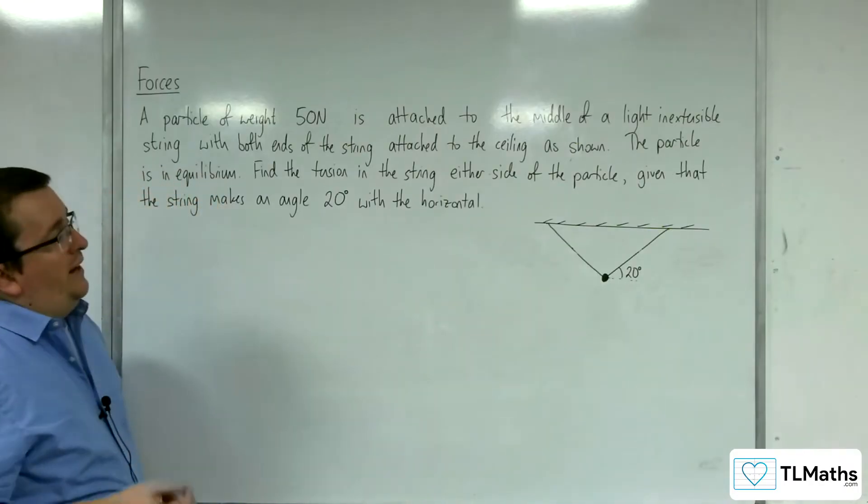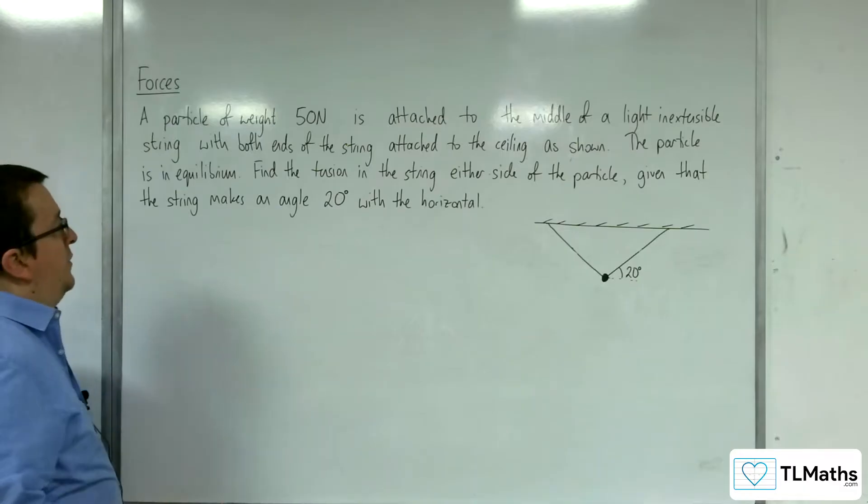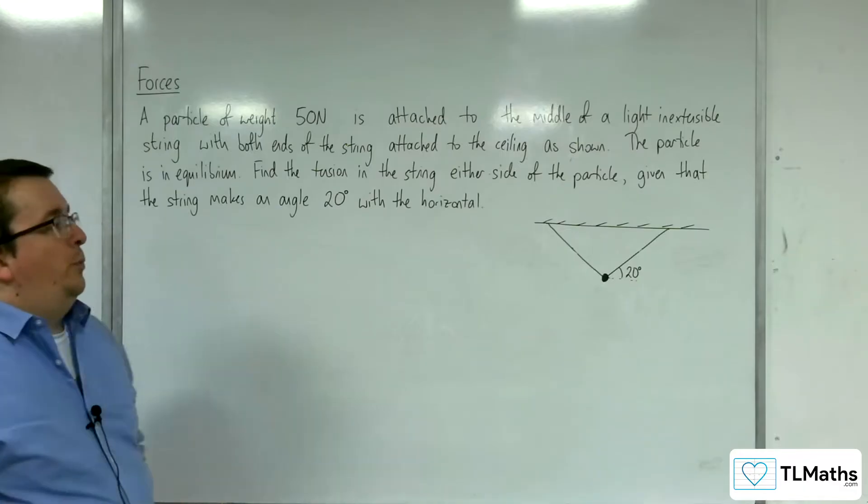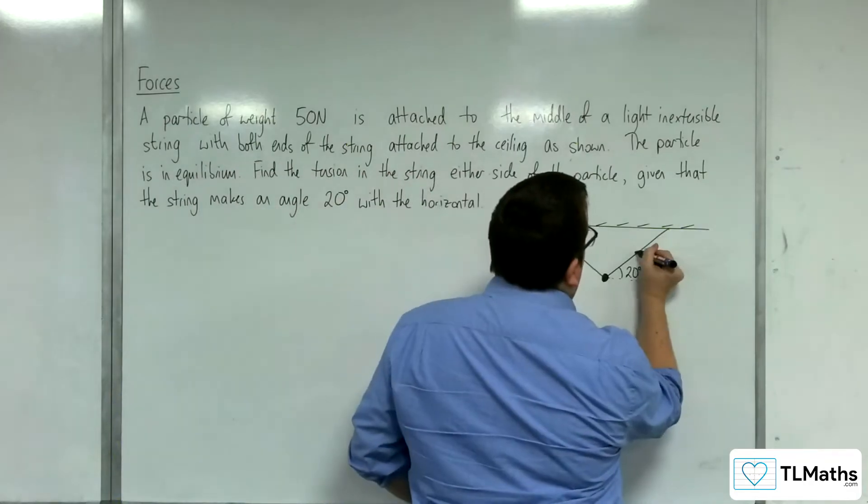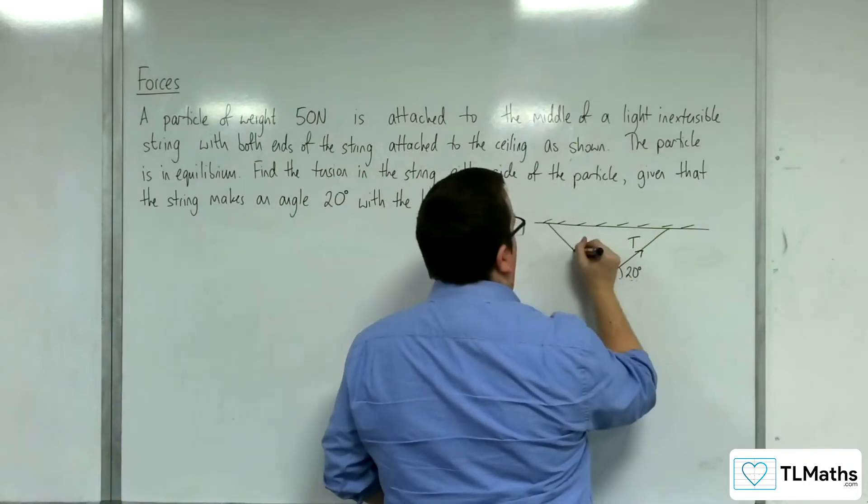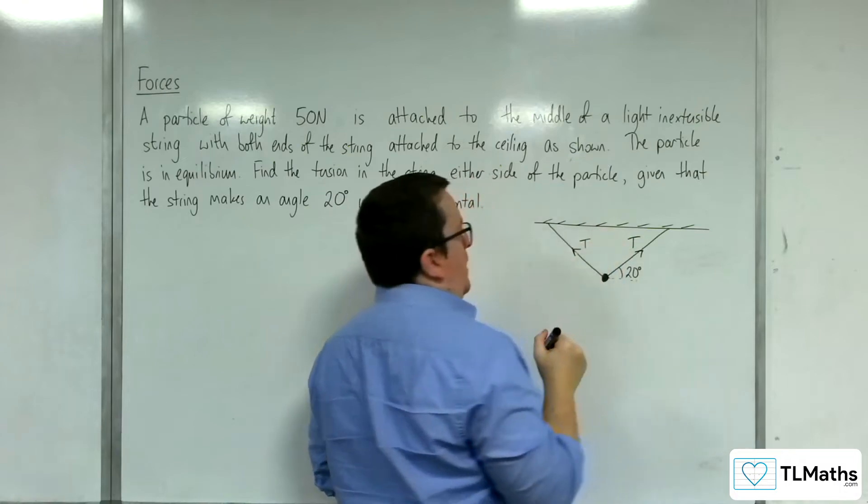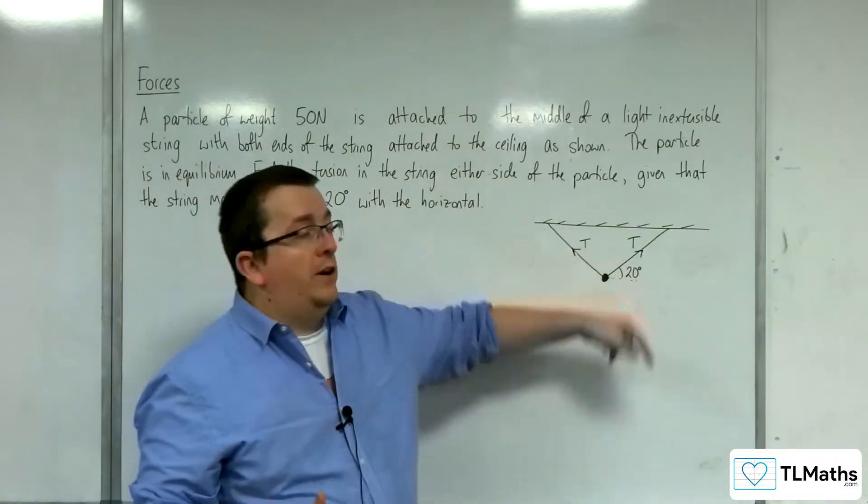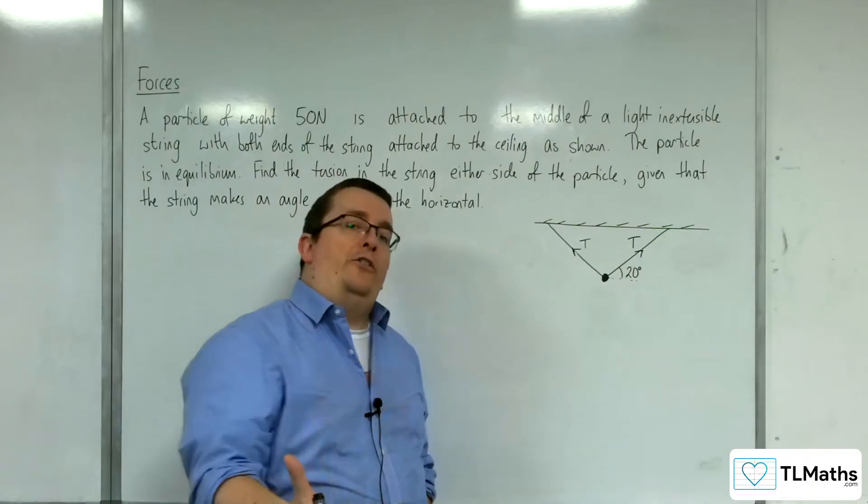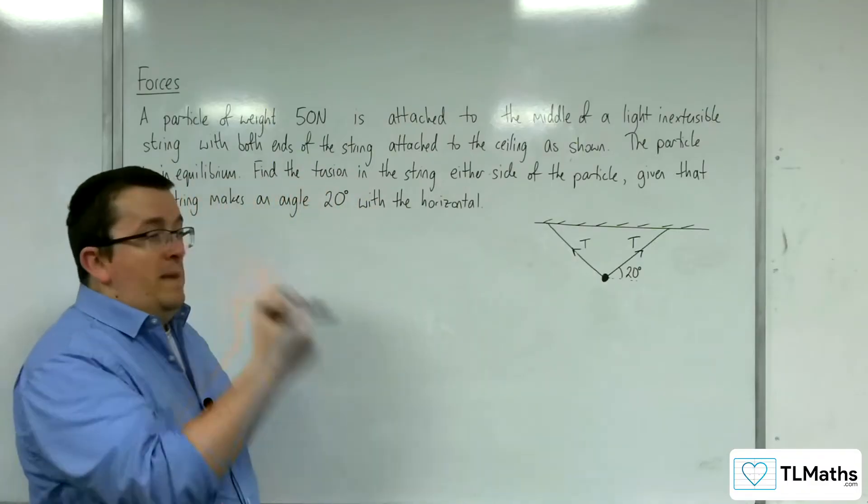The particle is in equilibrium. Find the tension in the string either side of the particle, given that the string makes an angle 20 degrees with the horizontal. We are interested in working out the tension that is in the string. Now both of those tensions either side will be precisely the same because the particle is in the middle of the string.